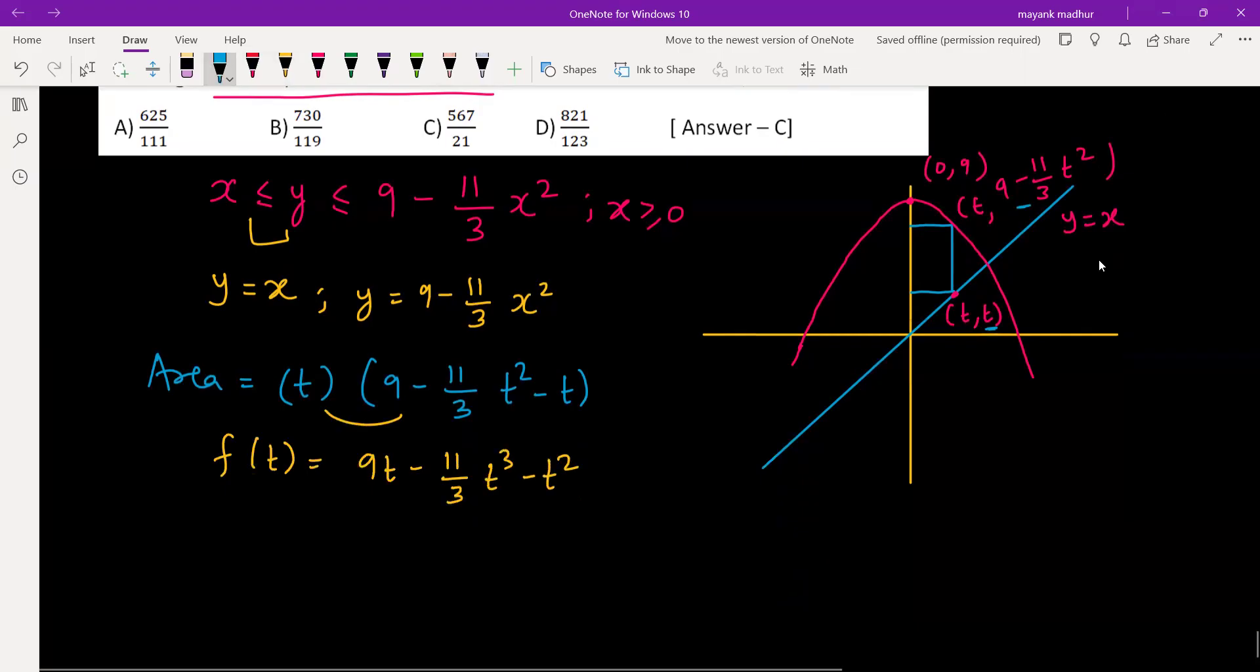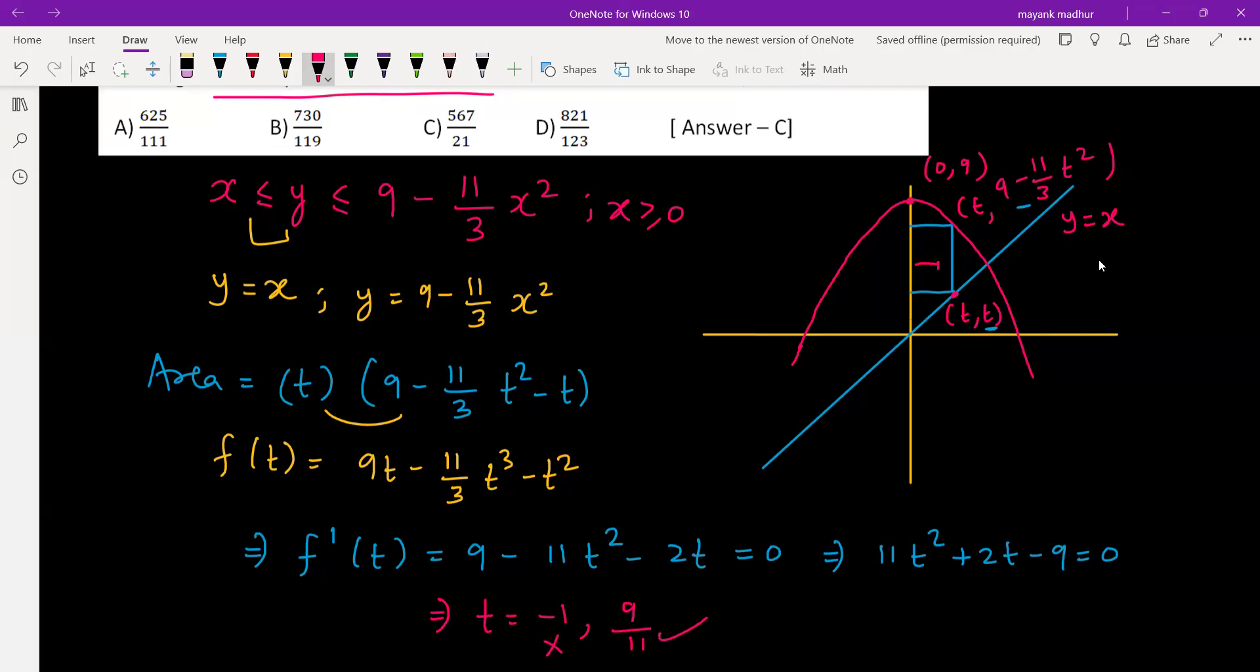To minimize or maximize any function we have to differentiate it. So when we differentiate this we will get 9 minus 11 times 3t square, so 11t square minus 2t equal to 0, which is 11t square plus 2t minus 9 is equal to 0. That gives us t is equal to negative 1 or 9 by 11. Negative 1 we have to reject because we are talking about the right side of the y axis, so t must be positive.